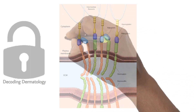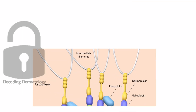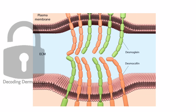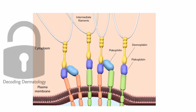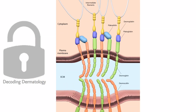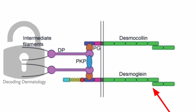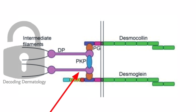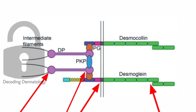Desmosomes have desmosomal cadherins such as desmogleins and desmocollins. They are transmembrane components, and desmoplakin and plakoglobin are cytoplasmic components. These desmosomal cadherins are calcium-dependent cell adhesion molecules and they show homophilic adhesions — meaning one type of desmoglein attaches to the same type of desmoglein of the other cell. The other end of the desmoglein is attached to plakoglobin, which in turn is attached to desmoplakin, and desmoplakin is attached to the keratin intermediate filament. These structures must be intact for maintaining the proper structure of the keratinocyte.